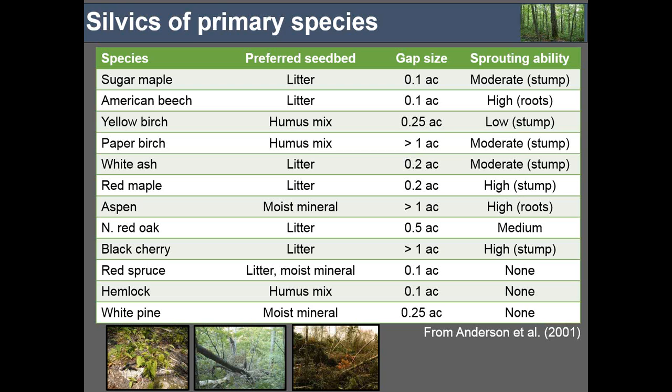One element to consider is sprouting capacity. American beech is a phenomenal sprouter, particularly from root systems, and as a result of beech bark disease we now have a lot of root-sucker beech in our forests. Many other species like sugar maple and white ash are much less effective at sprouting — particularly from stump sprouts — so their ability to respond vegetatively to disturbances is much lower than red maple and beech.